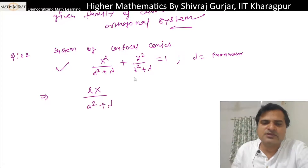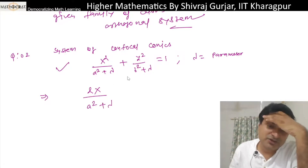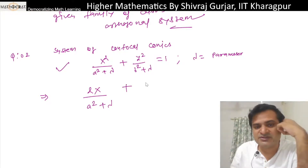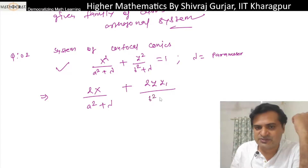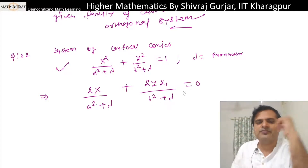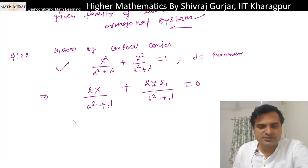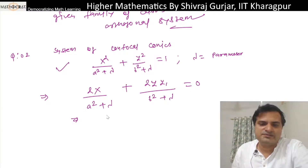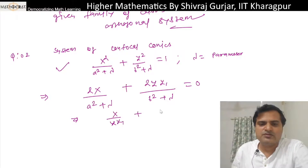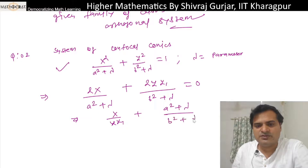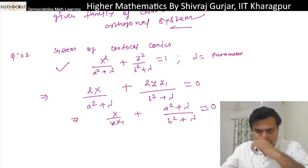a² plus lambda is nearly zero because we differentiate: we get 2y·y₁, and dividing x plus b² plus lambda equals zero. So we can say x divided by y·y₁ plus (a² + lambda)/(b² + lambda) equals zero.